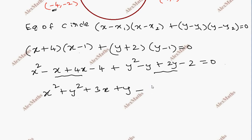Plus y minus 6 equal to 0. So you can see the general equation of the circle whose end points of the diameter are given.